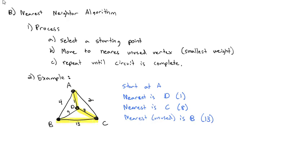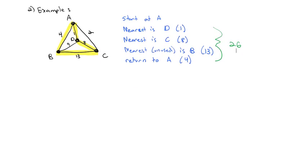And now the only vertex we haven't been to, or actually we've been to all the vertices, so we just have to complete it going back to A to complete our circuit, which uses a weight of 4. And if we add those weights together, 1 plus 8 plus 13 plus 4, we get 26. And so it seems our nearest neighbor algorithm has produced a path from A to D to C to B to A with a weight of 26.